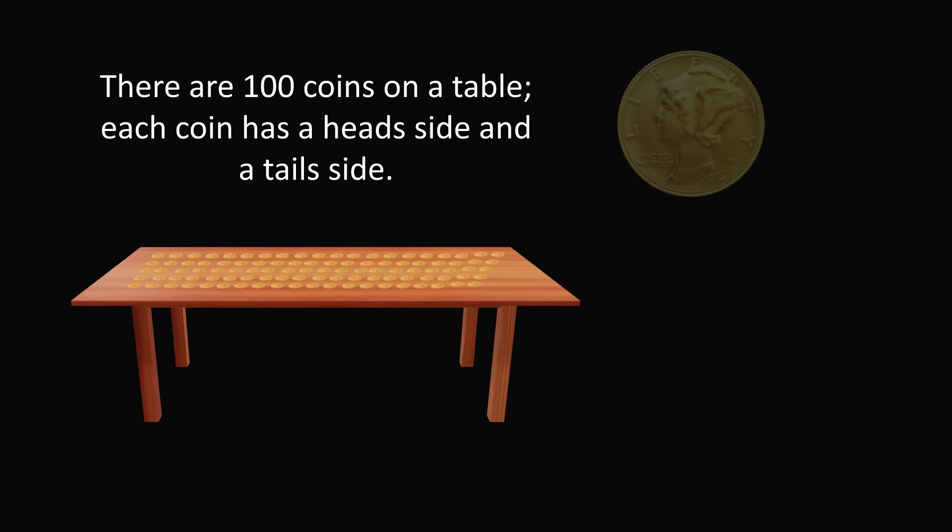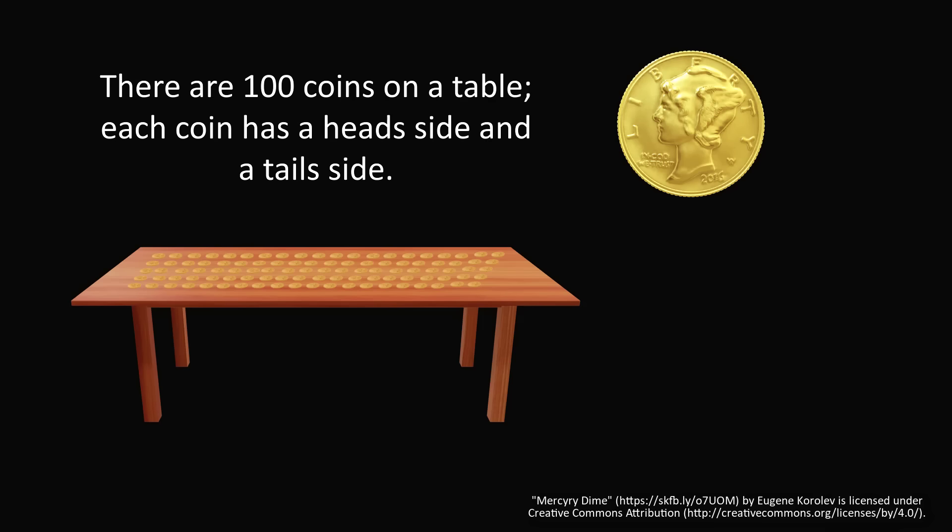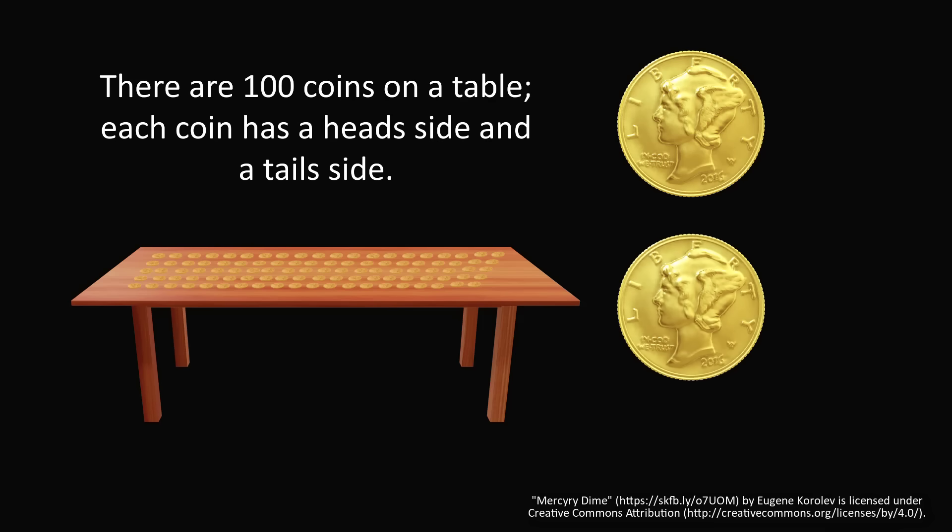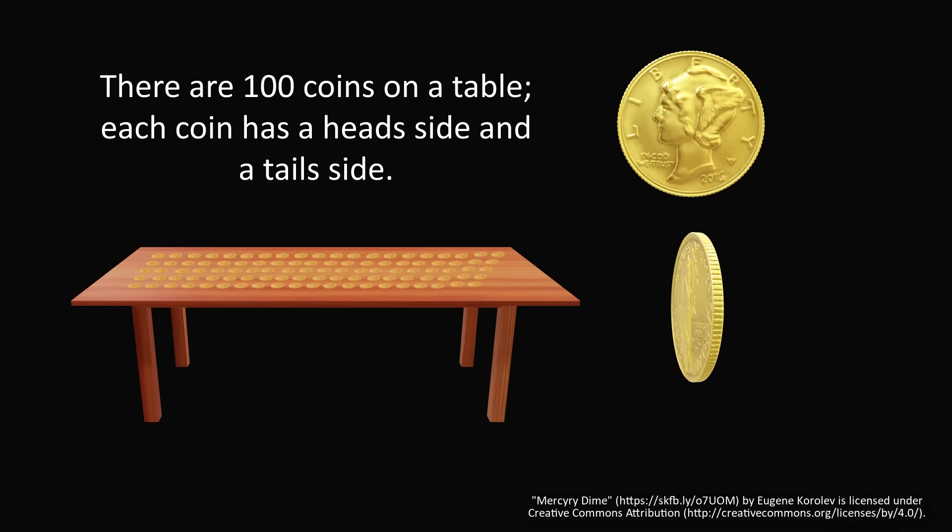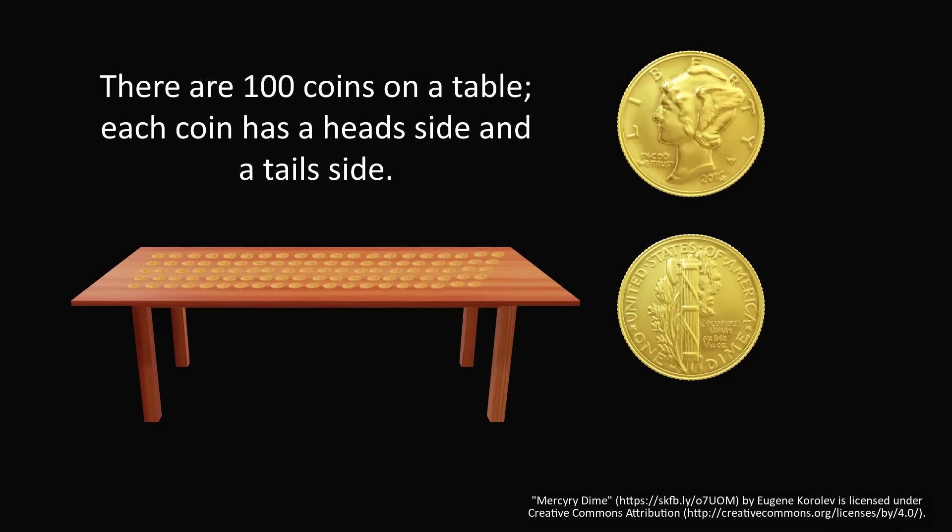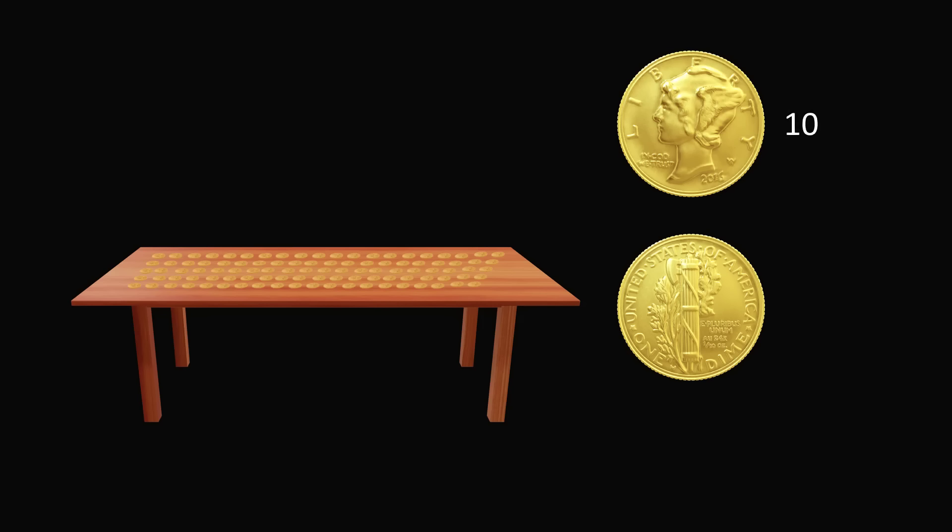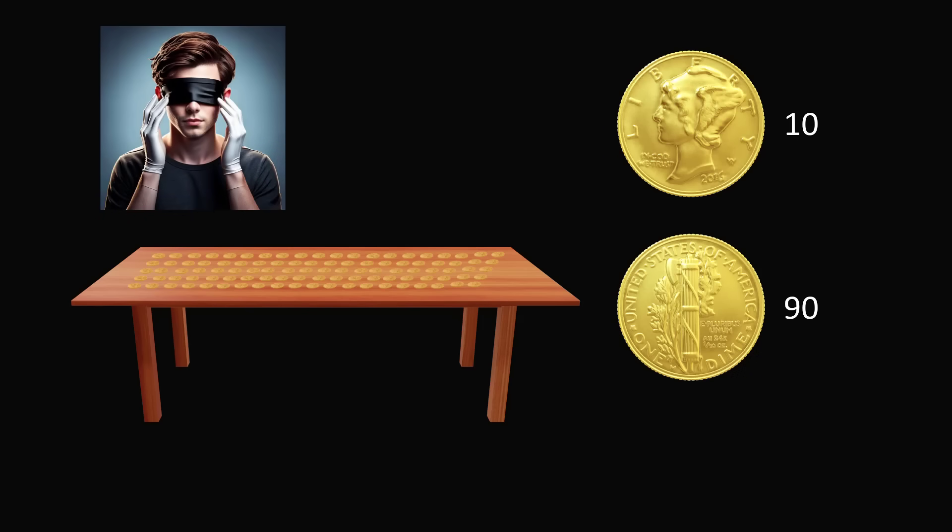There are 100 coins on a table. Each coin has a head side and on the other side of the coin is a tail side. There are exactly 10 coins which have a head side facing up and 90 coins have a tail side facing up. You are essentially blindfolded and wearing gloves. That means you cannot see the coins or feel for which side is facing up.